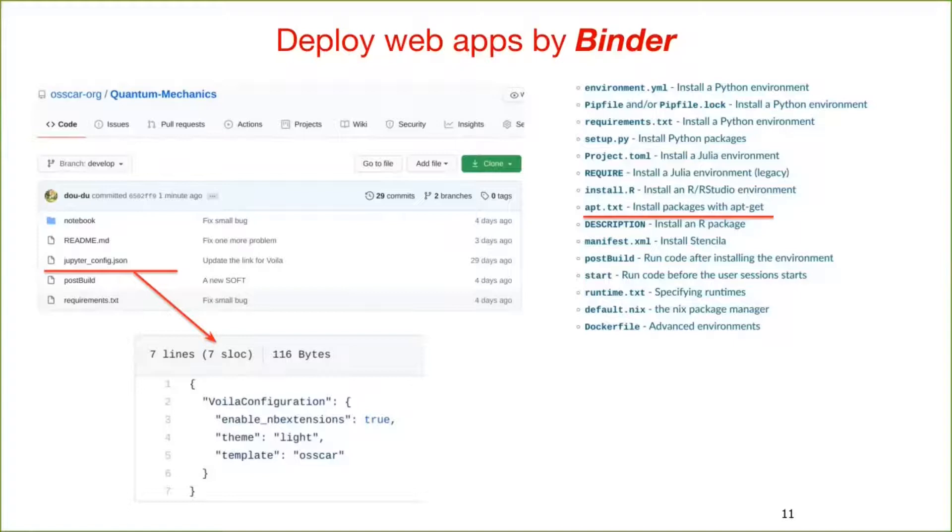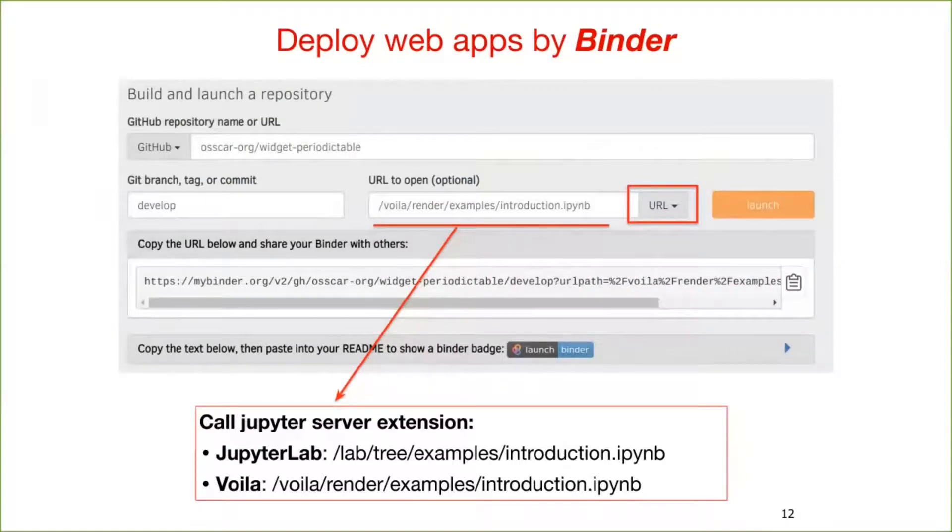On the right, you can see that other configuration files can be used with binder. For example, apt.txt will install packages by using apt-get inside the Docker container. After setting up the repository, we need to go to myBinder.org webpage. We input the information for the repository name and branch. In order to obtain the web apps, we need to call the Voila server extension by putting slash voila slash render slash before the notebook's path. Remember to use URL instead of file. Then, we obtain the URL for our applications. One can also copy the binder badge and use it in a readme file. If you want to show the notebook opened by JupyterLab, you can use the slash lab slash tree slash in the URL.